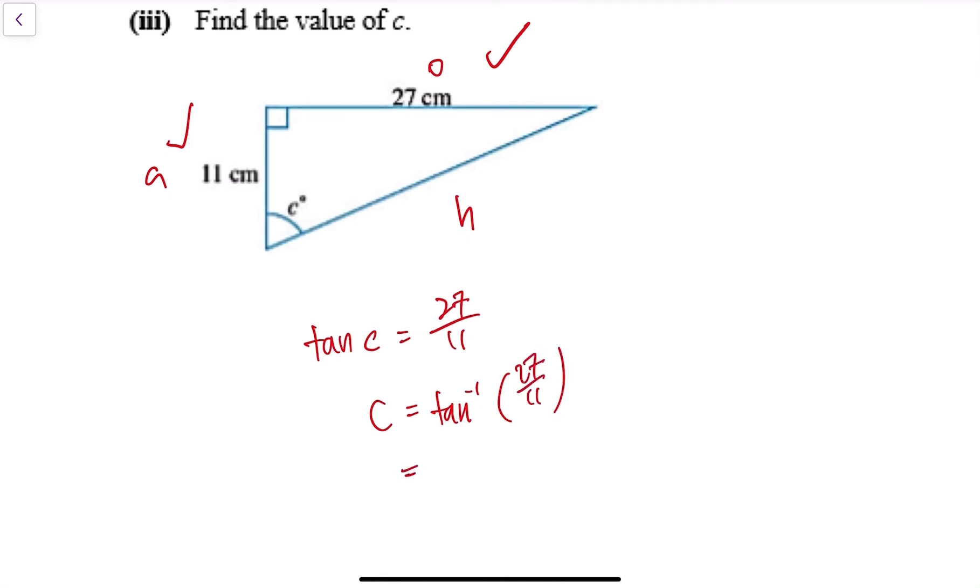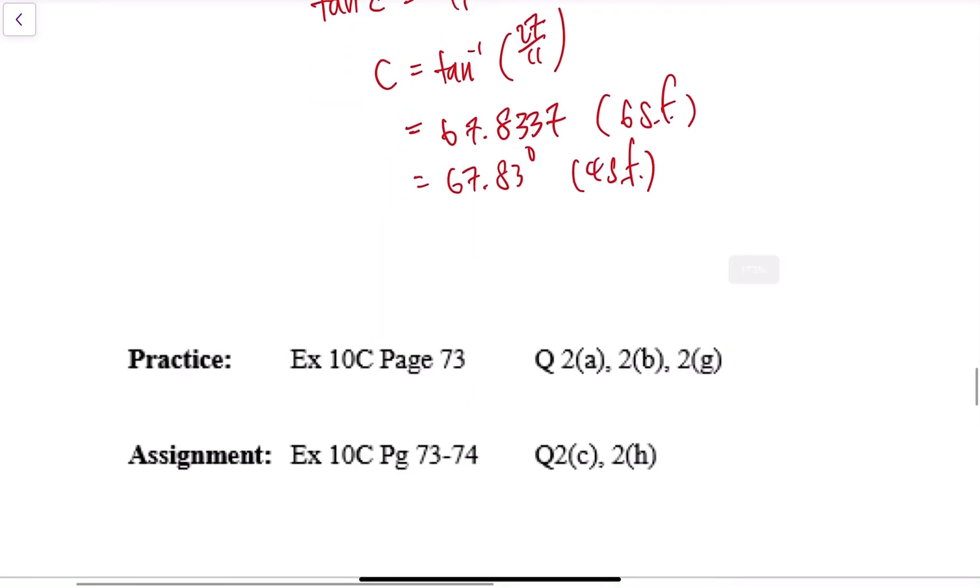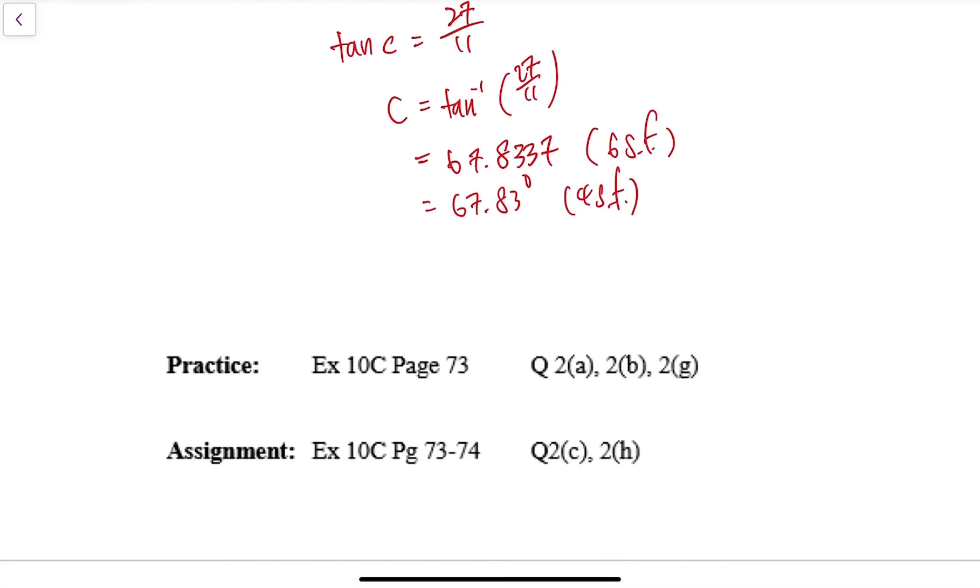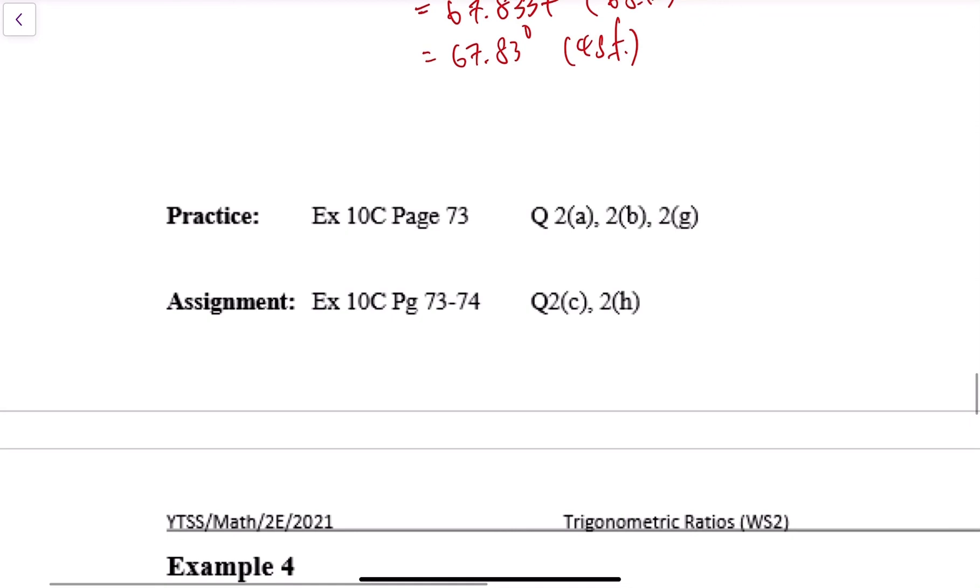And I get my answer as 67.8337, six significant figures. The final answer is 67.83 degrees for four significant figures. Okay, so that will be all for this part. Homework, please go and get it done for this segment. Don't miss it out.